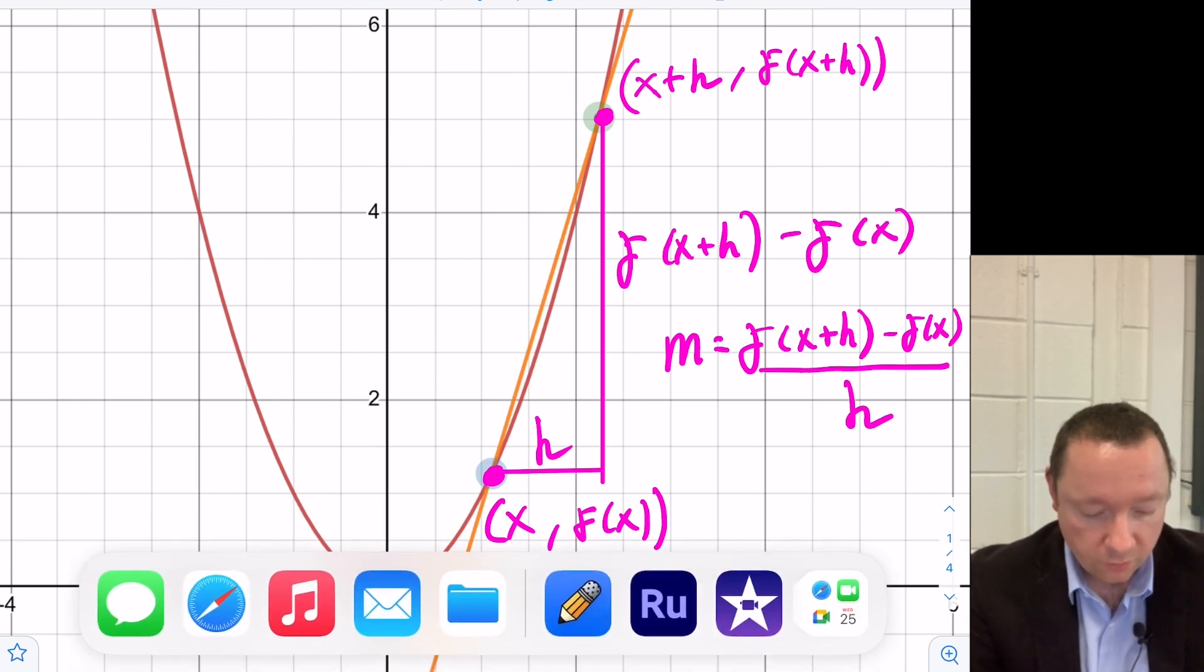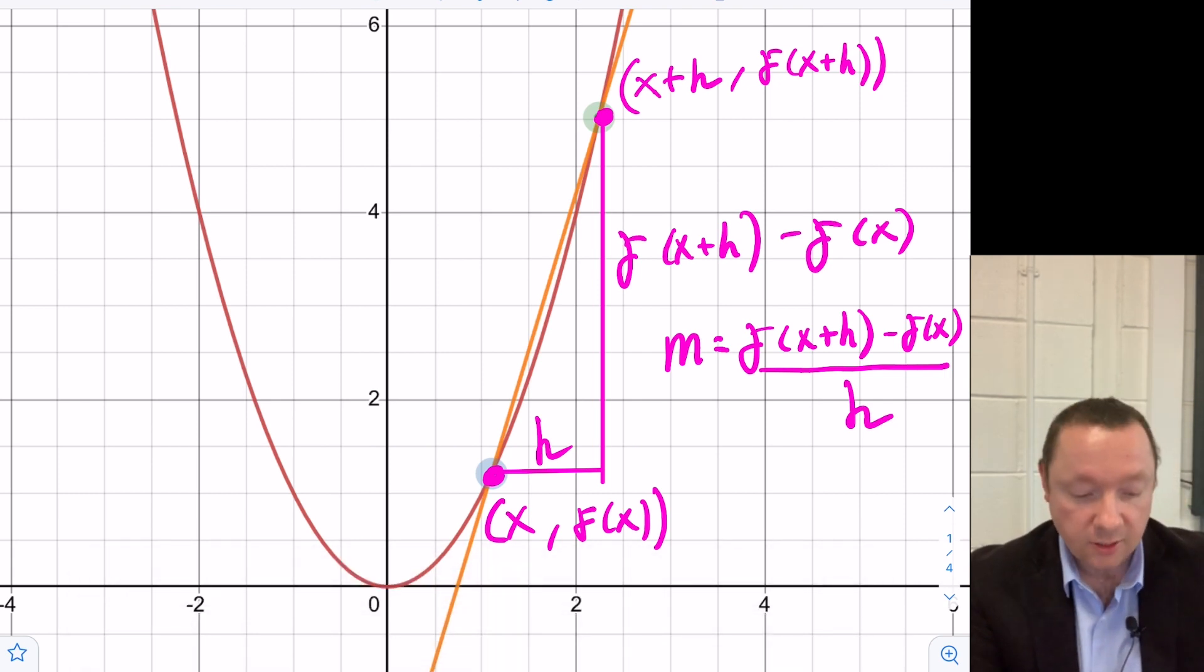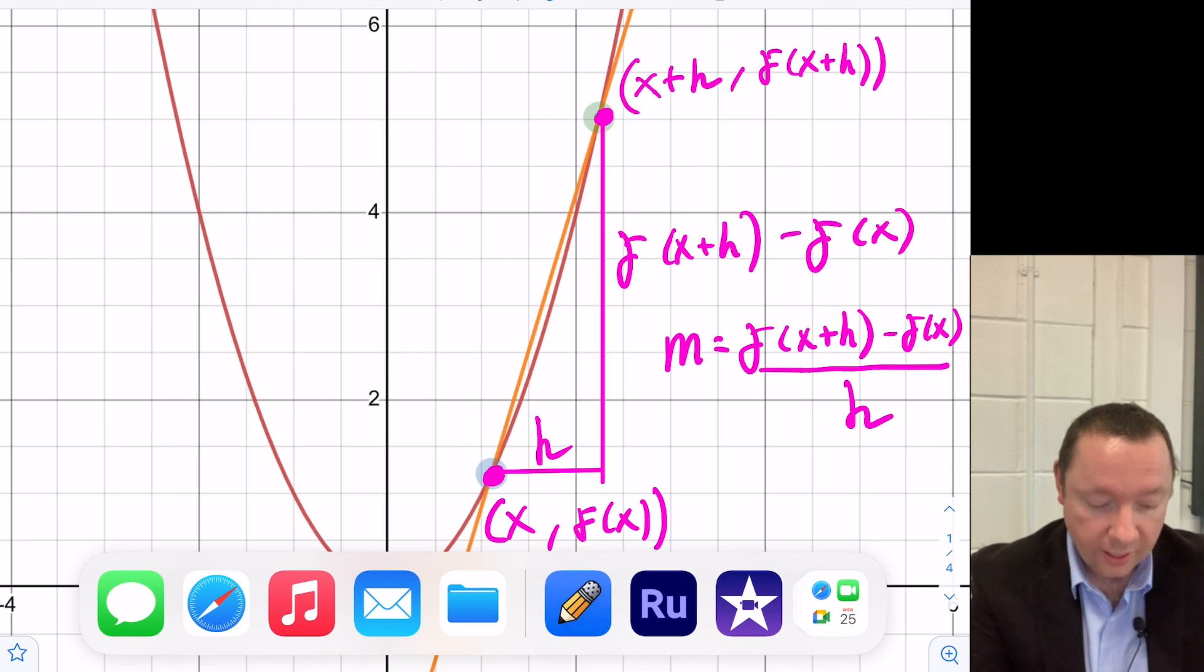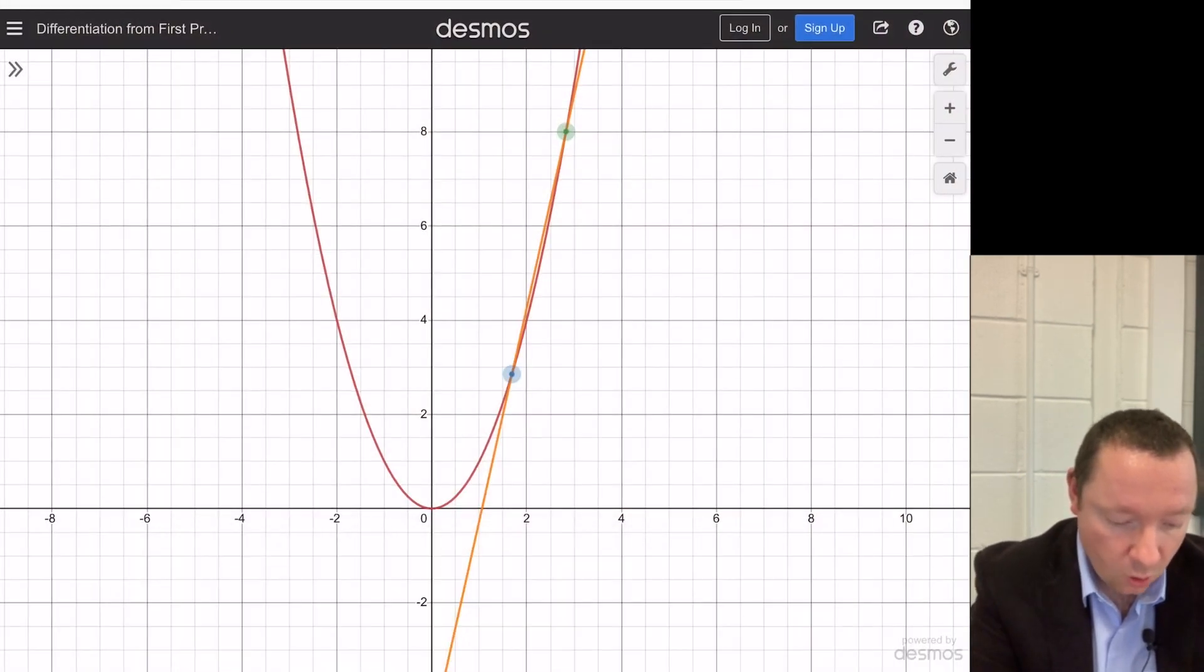Now, we don't define differentiation as the gradient of a line between two random points on our function. We define it as the gradient of the tangent, in other words, at a particular point. So if we go back to our animation, as these points get closer and closer together, you can see the distance between them becomes nothing essentially.